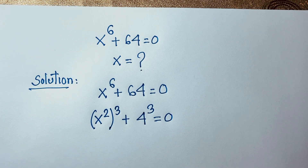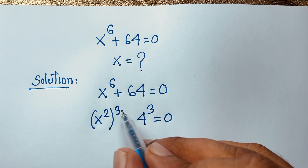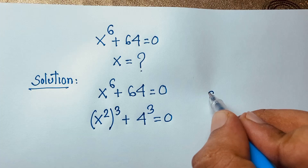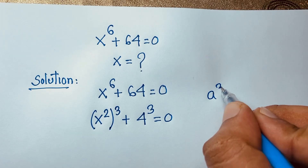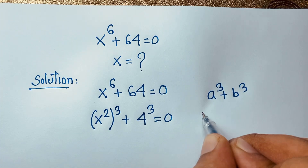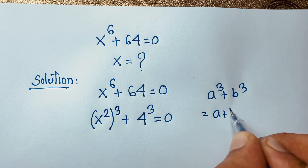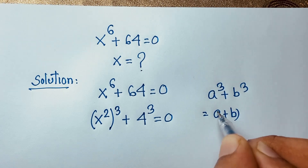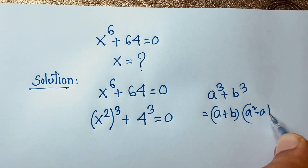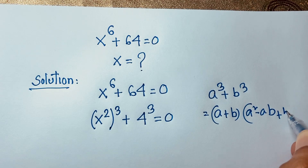At this point, I can see that this is a³ plus b³. If I follow this formula, we know that a cube plus b cube equals a plus b, times a squared minus ab plus b squared.